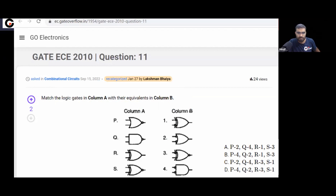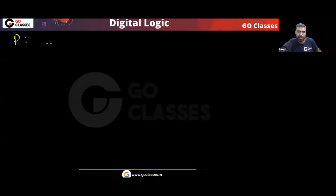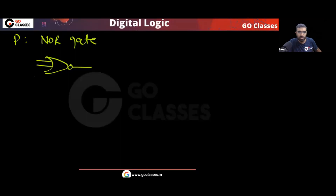Let's start with option P. You can see this is your NOR gate — an OR gate with a bubble. So if A and B are the inputs, the output of this NOR gate will be the complement of OR, that is Ā·B̄ (A bar AND B bar). So this is your P.